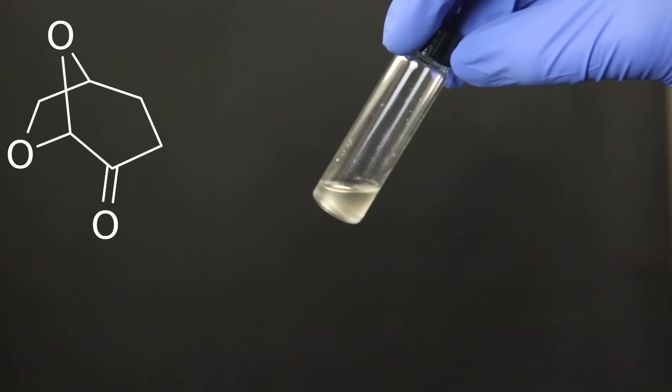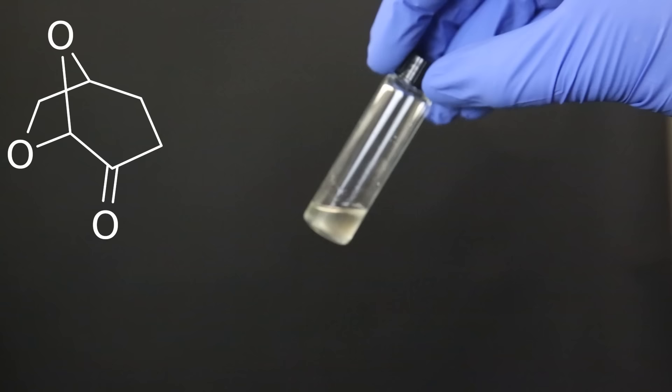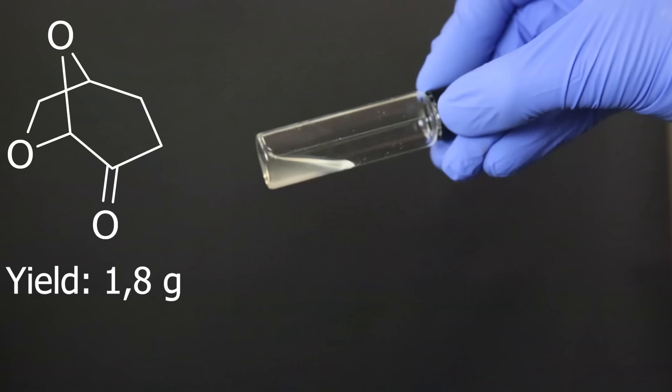But unfortunately, I have no way of testing its purity exactly. The cloudiness can also be from some water that was present in the ethyl acetate. Or perhaps some ethyl acetate itself. Anyhow, the yield of the product turned out to be 1.8 grams. Which is pretty much quantitative. Though its purity is unknown.